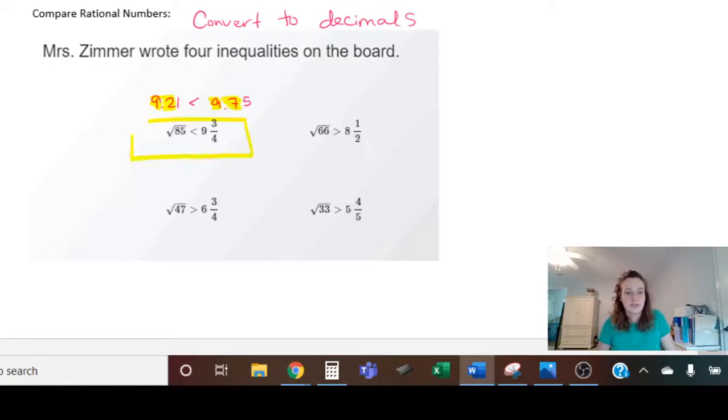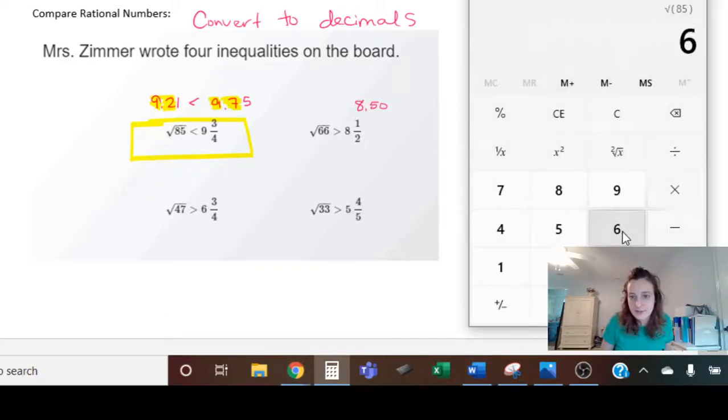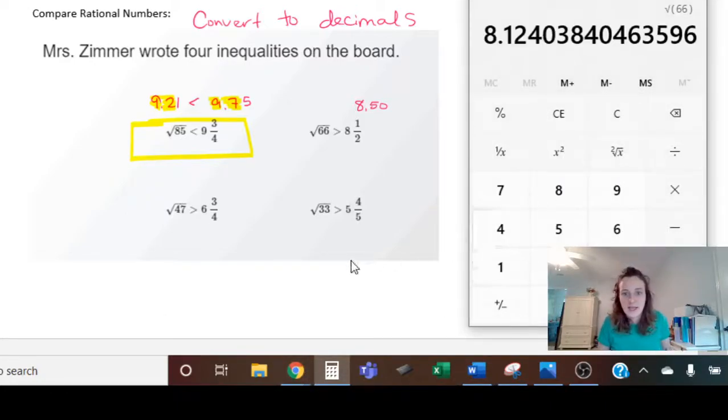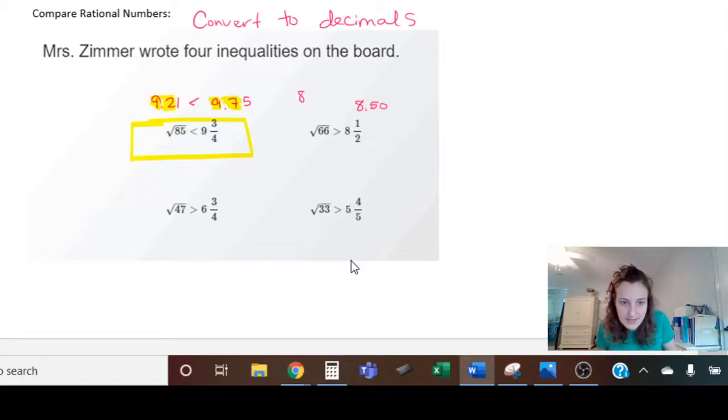Alright, let's move on to the next one. I have 8 and 1 half, which we know is 50 cents or 8.50. And now let's find the square root of 66 - 8.12. Is 8.12 greater than 8.50? No, so that's not true. 6 and 3 quarters - that's 75 cents. Now I have the square root of 47 - with my handy dandy calculator, 6.85. Is 6.85 greater than 6.75? Yes it is, so I will highlight that.